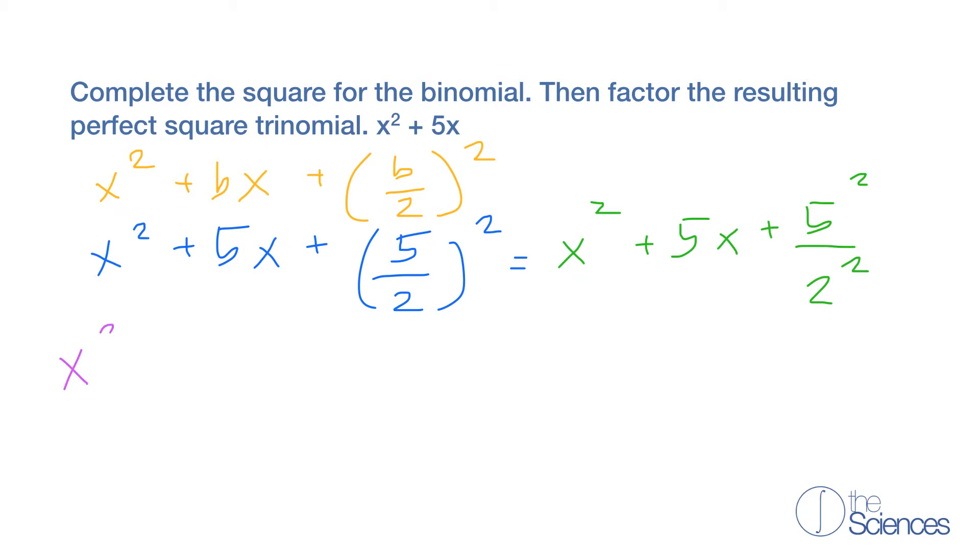So now we have x squared plus 5x plus, 5 squared is 25 over 2 squared is 4.